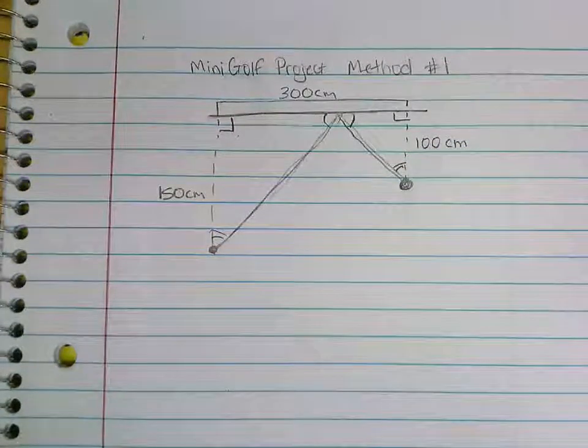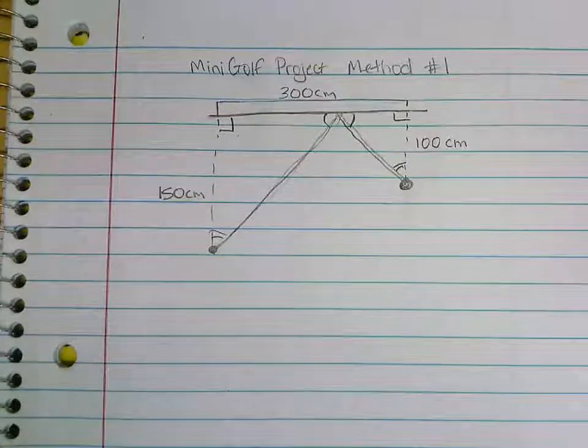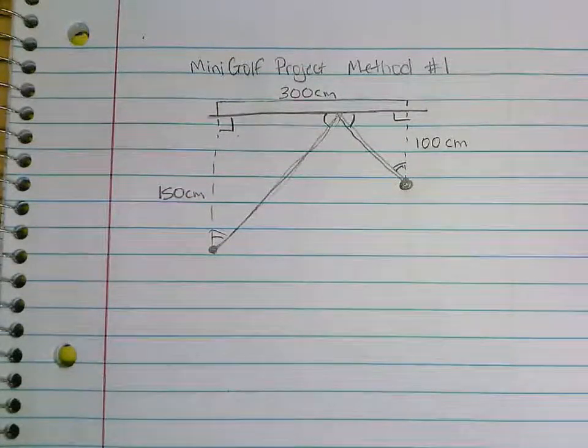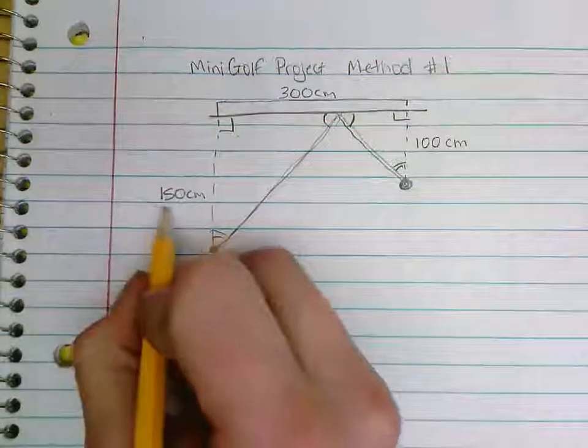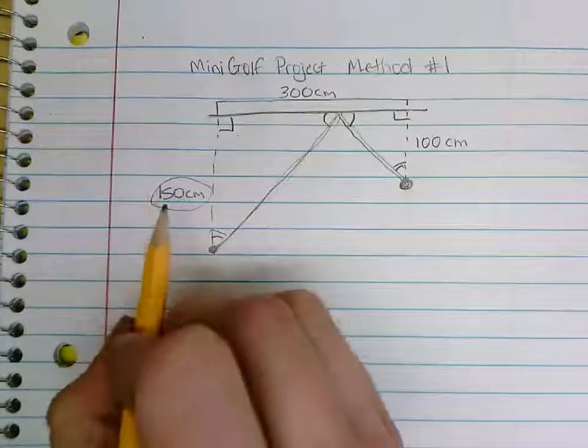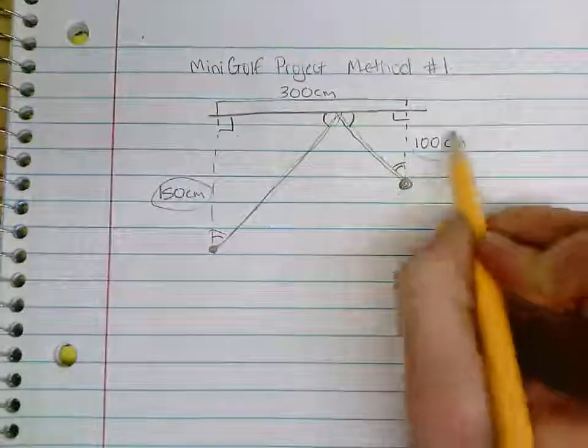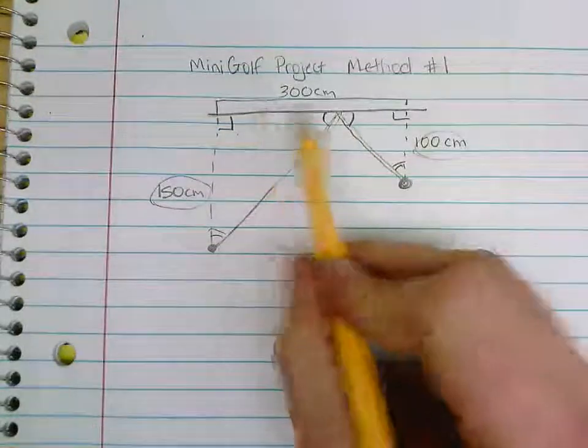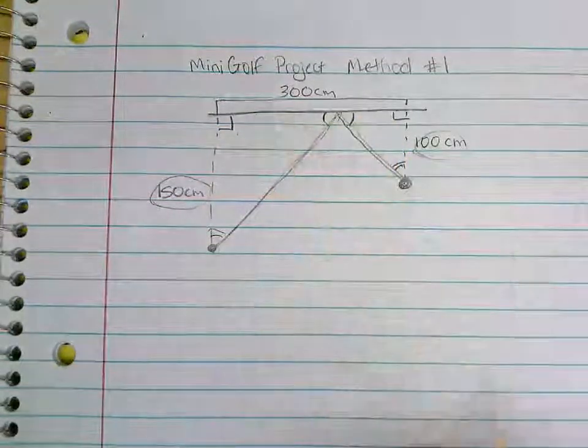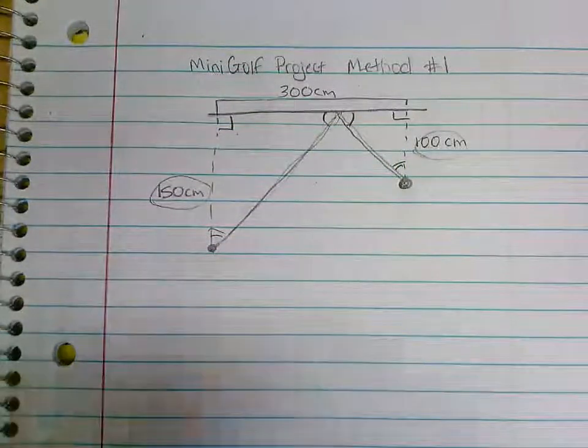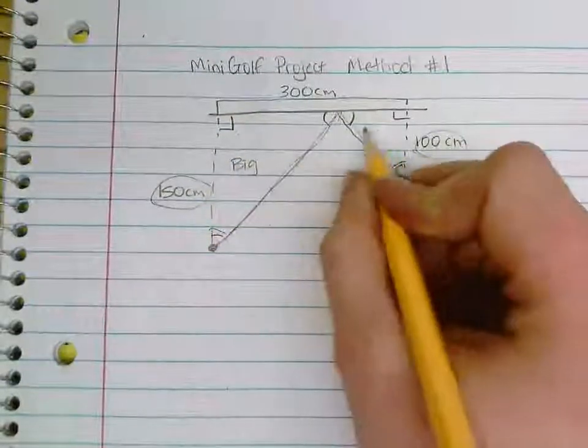If they're similar triangles, it means that the sides are also proportional. So I'm trying to figure out a ratio that I can use to make this side and this side proportional to these two sides here. So I need to figure out both of those measurements. Well, if I compare my big triangle to my small triangle...